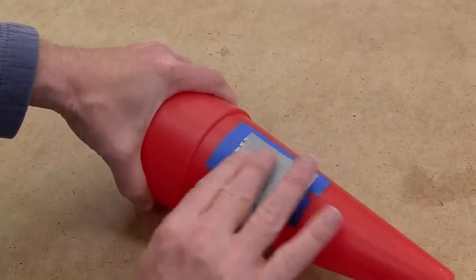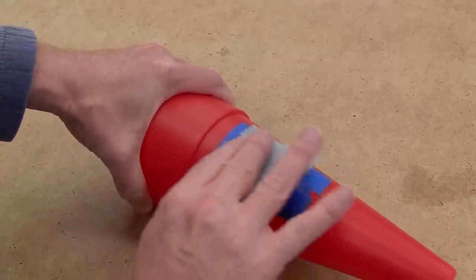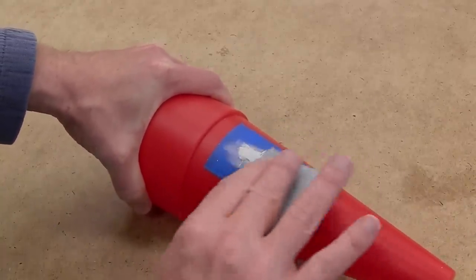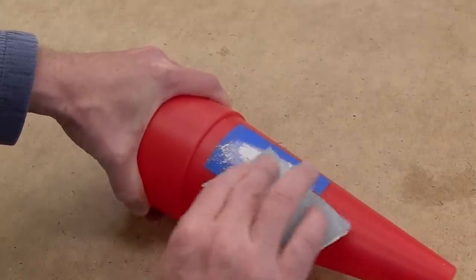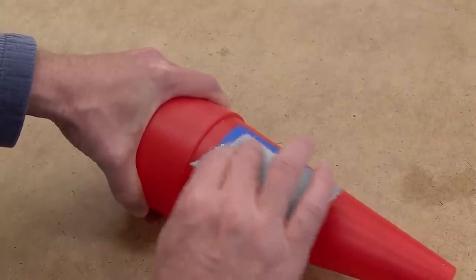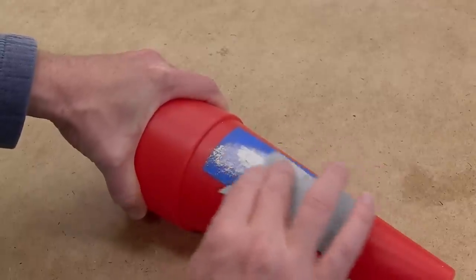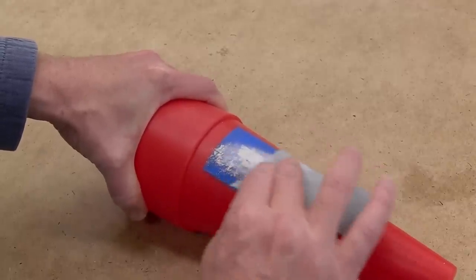Once the squadron putty dries, I can sand it, leaving the tape in place to protect the rest of the nose. Here I am sanding with 220, but once all the scratches are removed with 220, I'll also sand with 320 and 400 for a nice smooth surface.